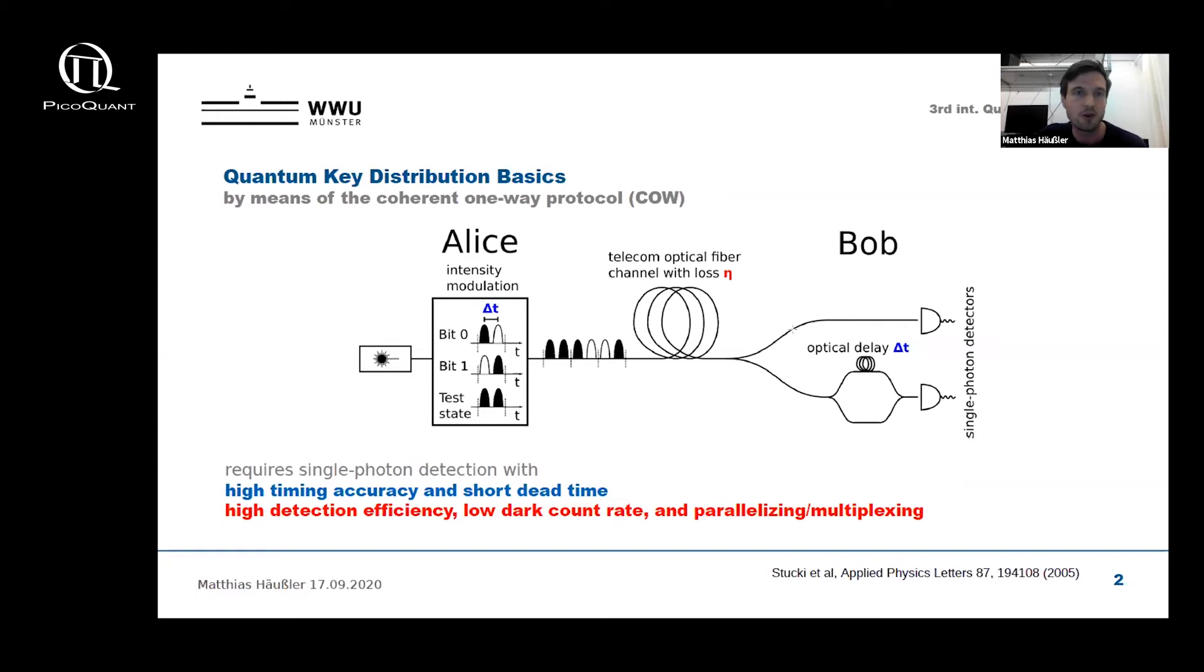A third option is that it's beneficial if the number of detection channels can be increased to compensate also for the channel loss. This can be done either by parallelizing or multiplexing, which means either by using not only one but a high number of fiber channels between Alice and Bob, or using a single channel and performing wavelength multiplexing. To sum it up, the COW protocol benefits if Bob's detectors have a high timing accuracy, a short dead time, low dark count rate, and high detection efficiency, and in addition if the system can be scaled up to several parallel channels.